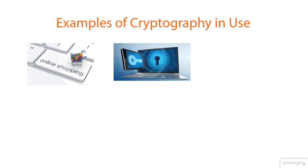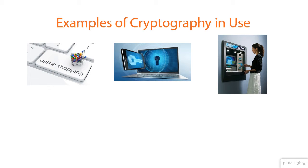The next example is that of authenticating with different systems or websites. To access different systems you need to be able to prove who you are. This is commonly done by authenticating yourself with your username and password. We cover secure password storage in some detail later on in the course. Every time you put your bank card into an ATM machine and enter your PIN, cryptography is being used behind the scenes, including to validate the PIN number and authenticate the user.